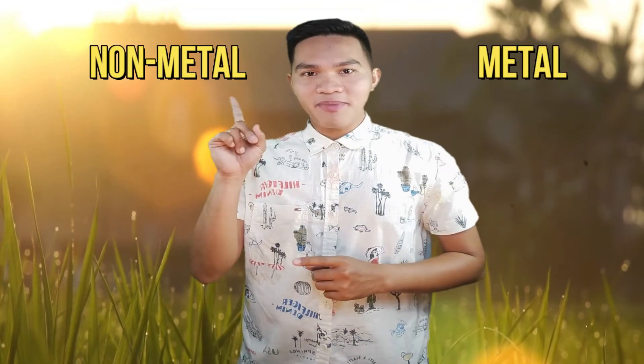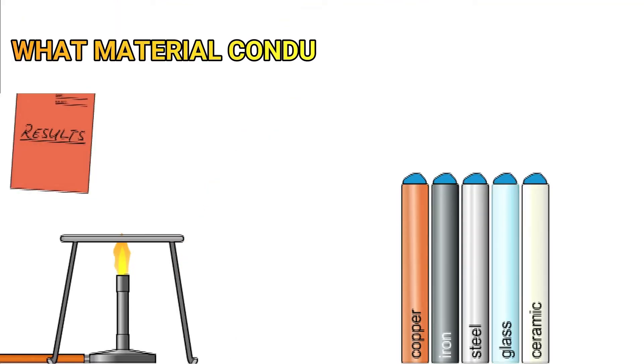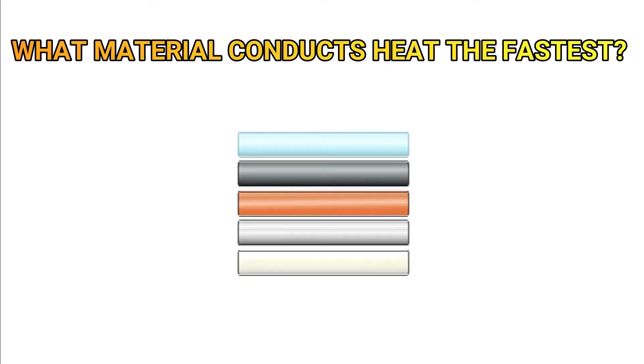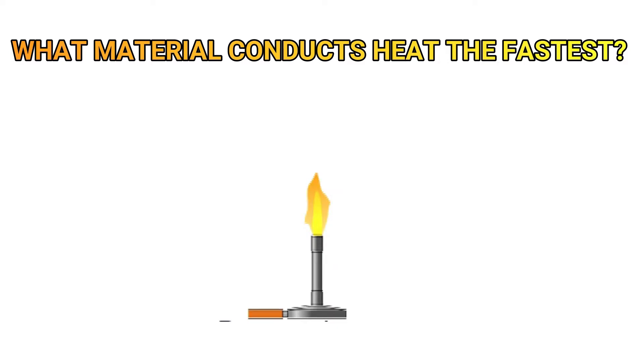Some materials conduct heat more efficiently than others. This depends on the type of the material, whether it is metal or non-metal. In this simulation, we will use metal, glass and ceramic rods, bands and burner, stopwatch, candle wax and tripod.